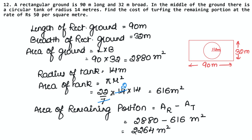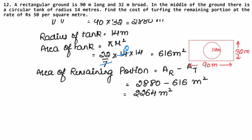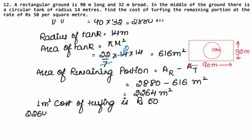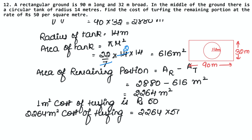Now we will find the cost of turfing. The cost for 1 m² of turfing is ₹50. So the cost of turfing 2,264 m² is 2,264 × 50 = ₹1,13,200. That is our turfing cost answer.